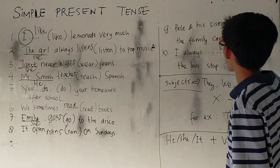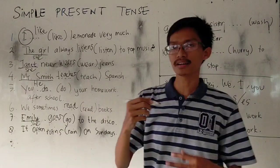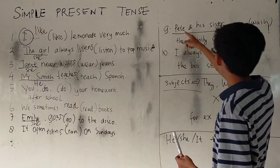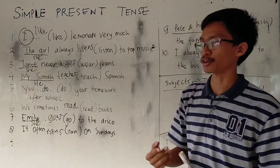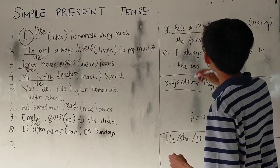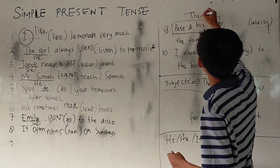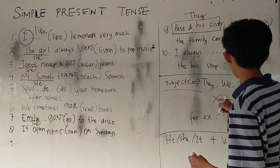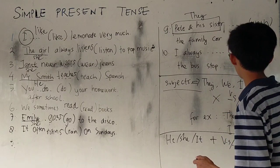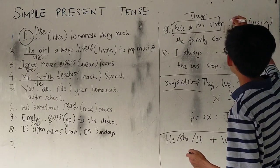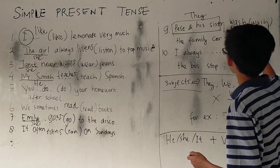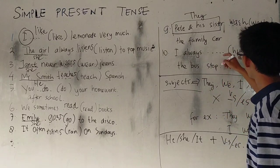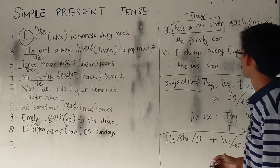Number nine: he and his sister. This number is a bit different because there are two people — two characters or two persons. You can change it into 'they.' They belong to the they/we/I/you group, so you don't add S or ES. So: he and his sister — watch. Last number: I always — it belongs to this group — I always hurry.